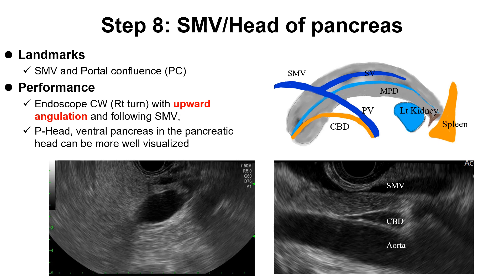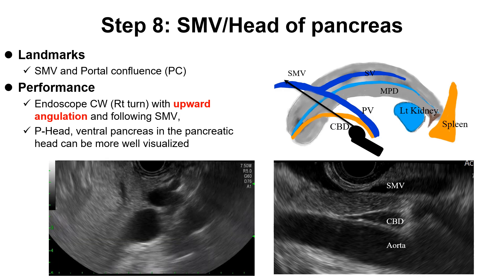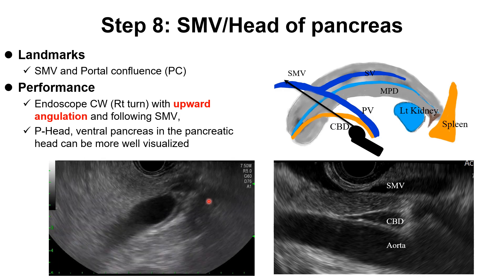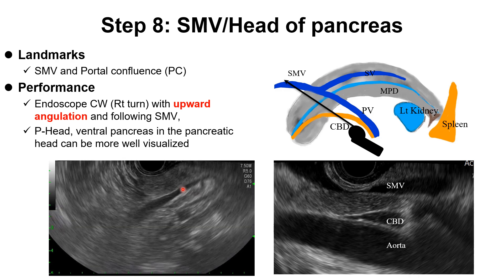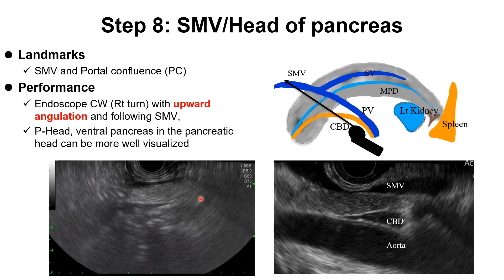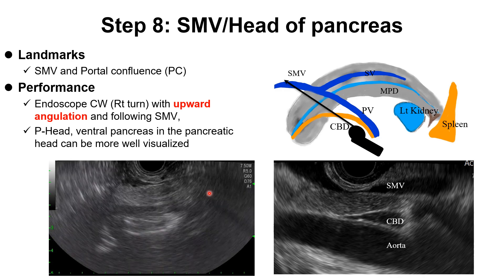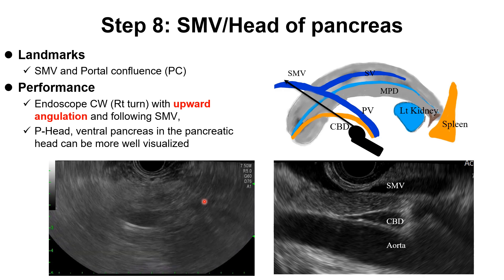Step 8: SMV and pancreas head. In this area, the landmarks are portal confluence and SMV. With clockwise rotation and upward angulation, following the SMV, we can see the lower portion of the pancreas. We can also see the ventral pancreas in this imaging. Video clips show dilated CBD and SMV. Following the SMV, we can see the lower portion of the pancreatic head including the ventral pancreas — a low echogenicity area.